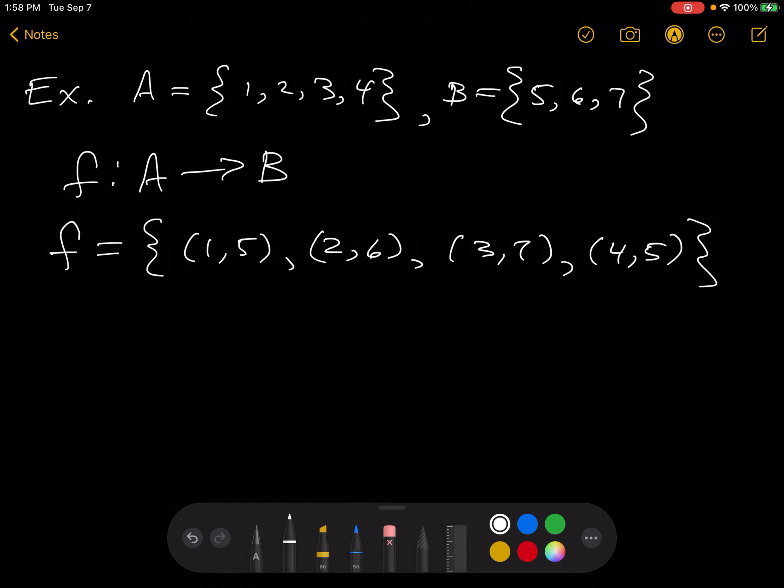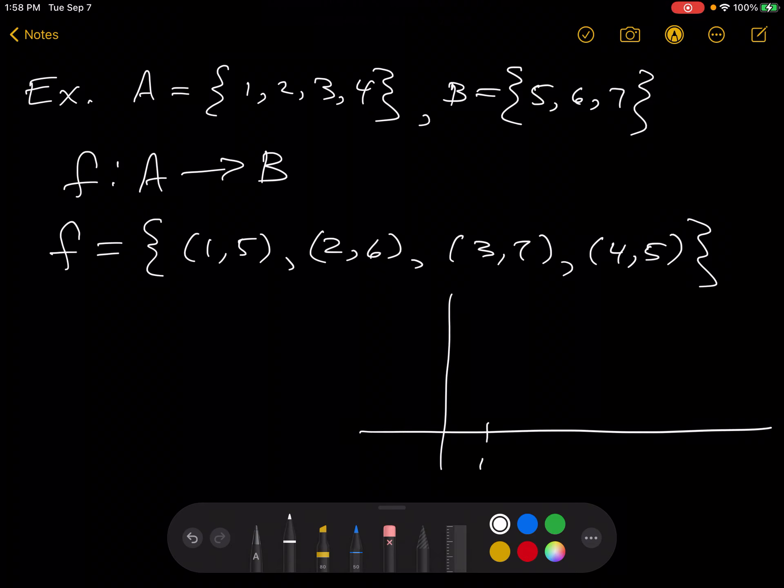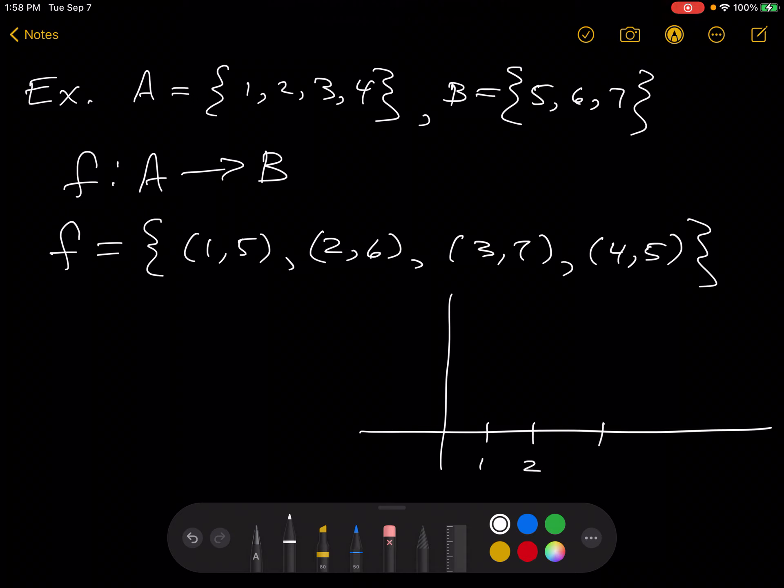Now, this function is not one-to-one. We can see that in a few ways. I guess the easiest way to see it is just by graphing it. So let's see. We have 1, 2, 3, and 4.